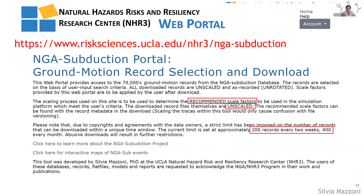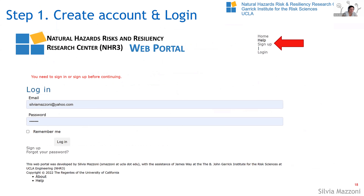The dataset is a full dataset. A lot of ground motion modelers didn't use all the records, so it's up to the user to do quality control, because different people have different requirements and different applications. When you first enter the portal, remember we're giving you recommended scale factors — make sure you read the notice at least once. We still have the limits of 200 records every two weeks and 400 every month, because that's how we've managed to make these records available to the public.